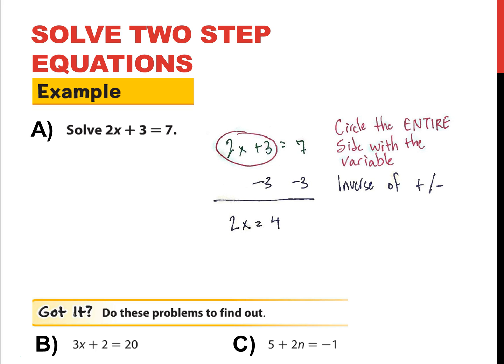Same thing, and this looks very much like what we explored in the first video in this chapter. I have 2 times x is now equal to 4, and the inverse of multiplication is division, divide both sides by 2. Boom. And that, of course, gives us x is equal to 2.